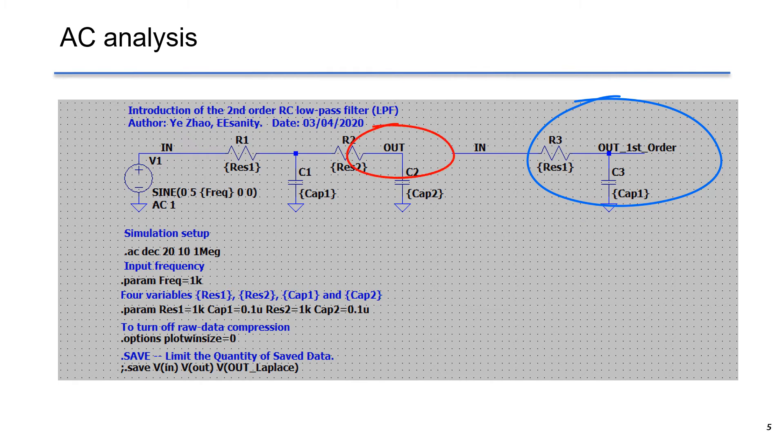The out is the second-order RC filter output. Out_1st_order is the output of the first-order low-pass filter. They have the same input voltage, which is the AC disturbance at 1 volt as the magnitude.